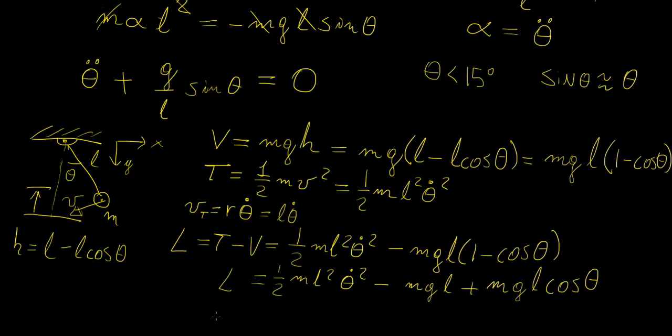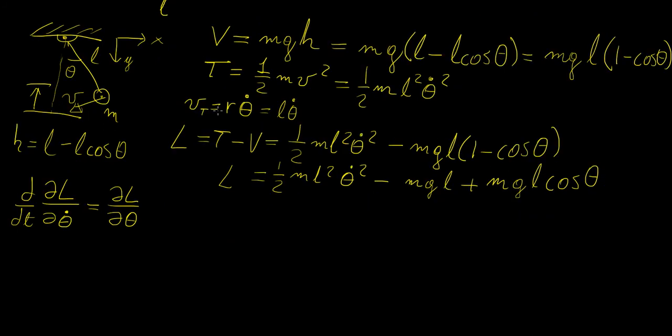All right so now what we need to do is plug this into our Euler-Lagrange equation which is this one here. In this case we're going to have theta as our coordinate so we have Lagrangian with respect to theta, so we have to find those two derivatives there. So let's start off with the easiest one which is just the displacement so this is treated as a constant so it becomes zero.